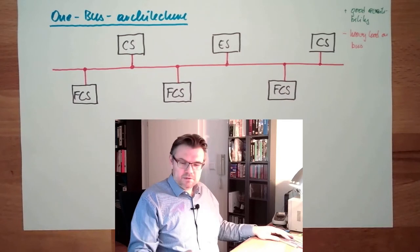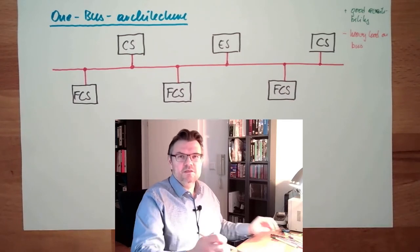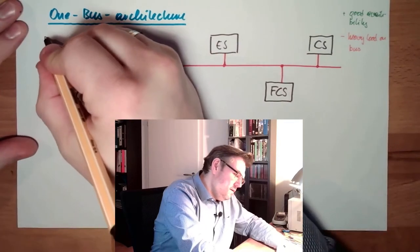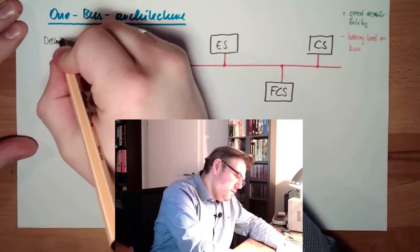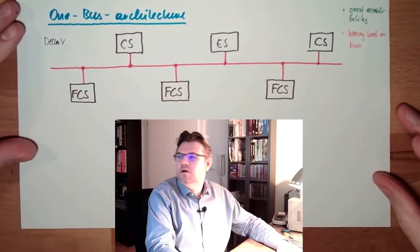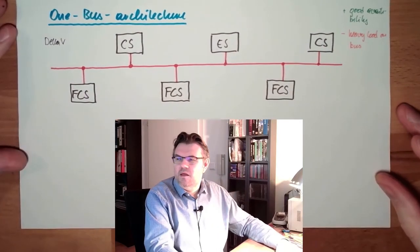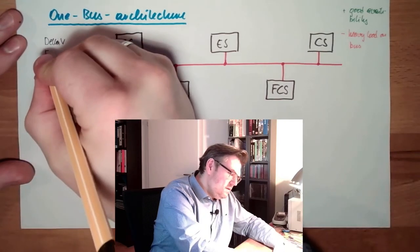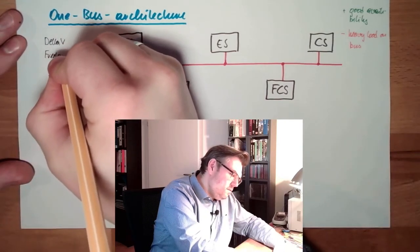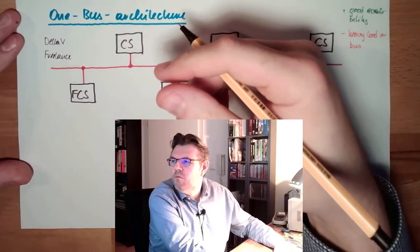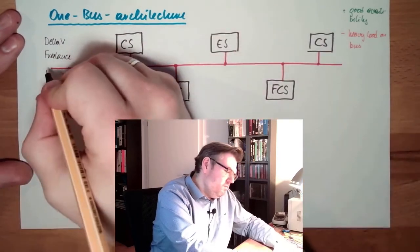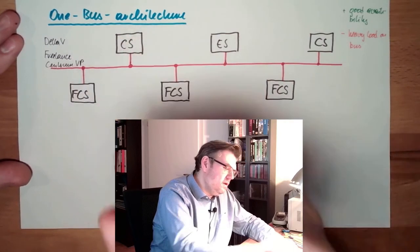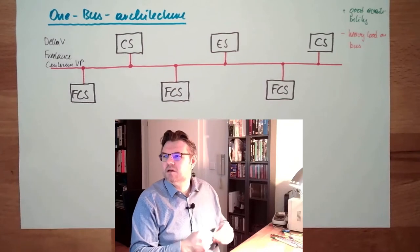There are several examples of one bus architectures. There is, for instance, Delta V from Emerson Electric, and from ABB we have Freelance, or from Yokogawa, Centum VP. These are examples of the one bus architecture.